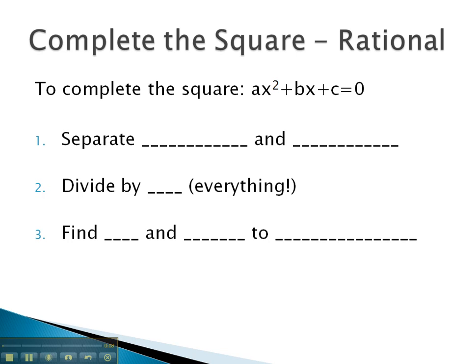If we wanted to solve this equation by completing the square, we must set it up to complete the square by first separating the variables and constants, or numbers.